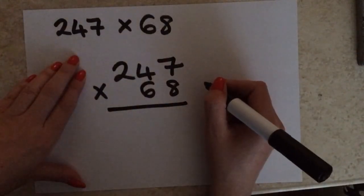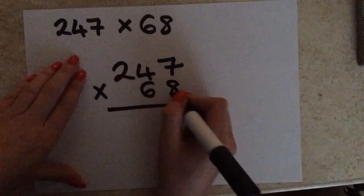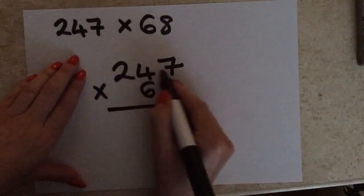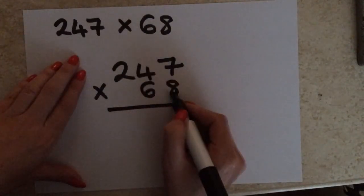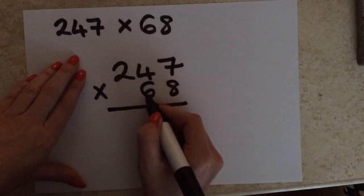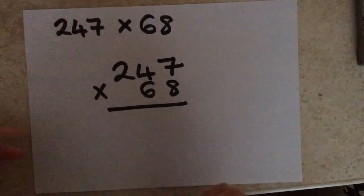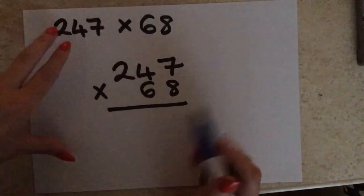Now, on the previous example, I wrote these two numbers in different colours. Just to emphasise that we're multiplying all of this number by this number first, and then all of this number by this number secondly. So, what I am going to do is a little change on this one, is I'm going to write my answers in different colours.